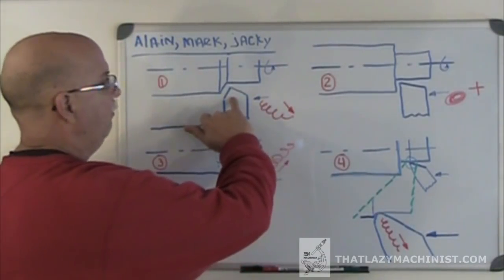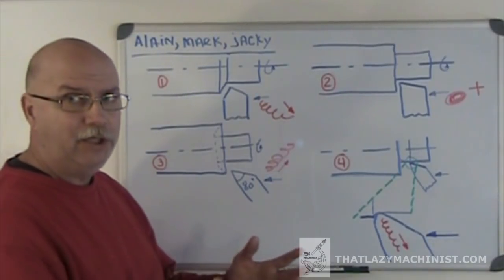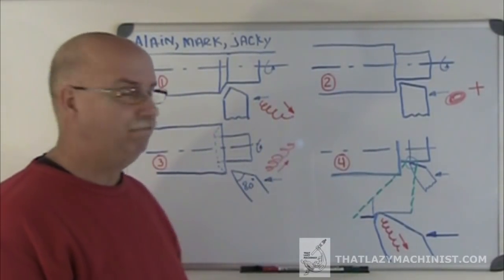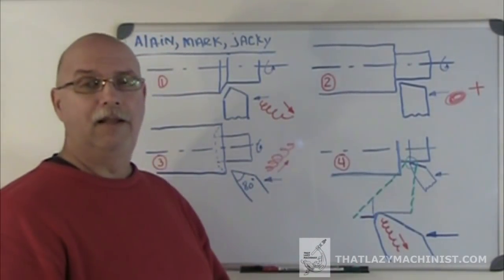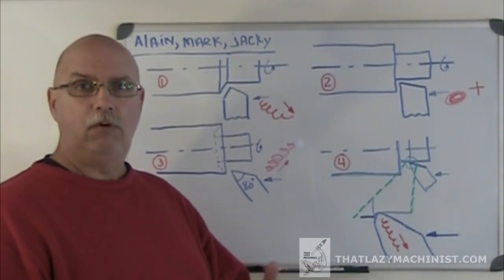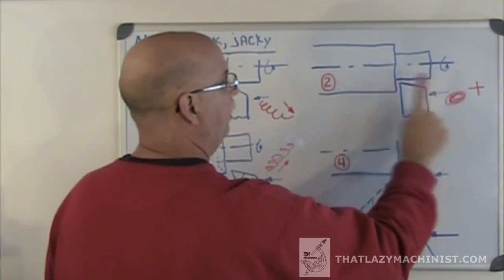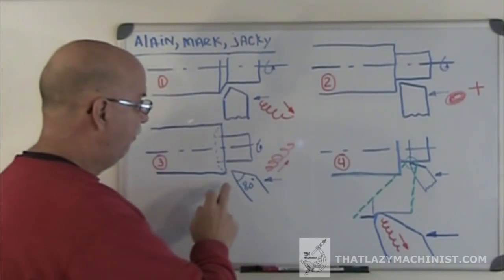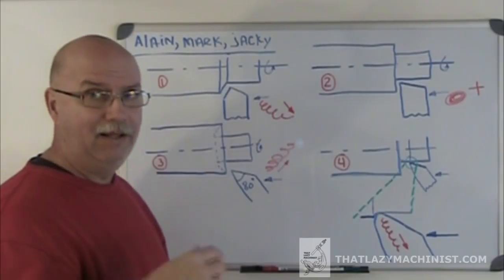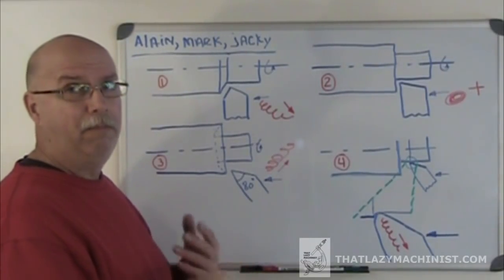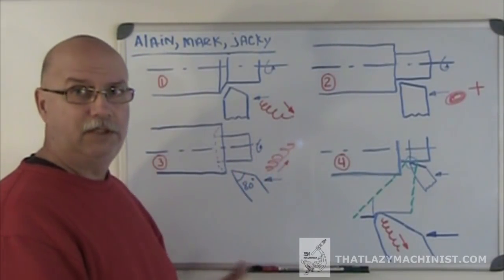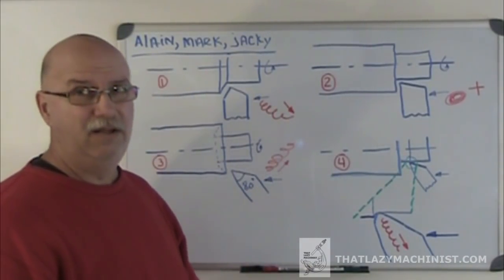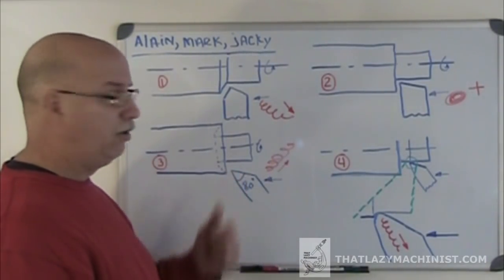As a general rule: a positive angle on the cutting lip will draw the chip away from the part — the curled chip moves away from the cut surface. A neutral cutting lip angle will fold the chip back on itself, bringing it back onto the cut, which could be problematic. A negative cutting angle on the cutting lip will draw or push the chip into the surface we've just cut, scratching and marking that surface.